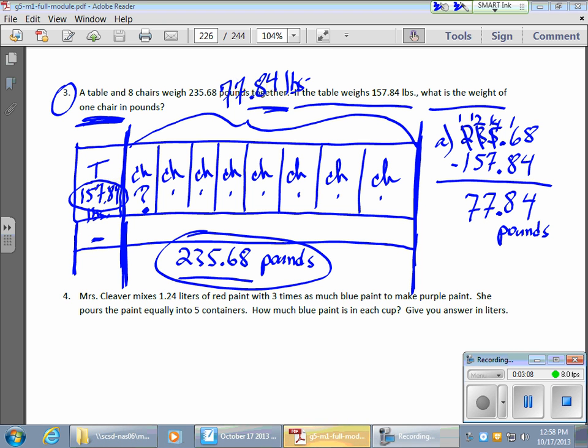the last thing I need to do is divide the number of chairs into 77.84. So I have 8 chairs, here's my 8, I have 77.84.